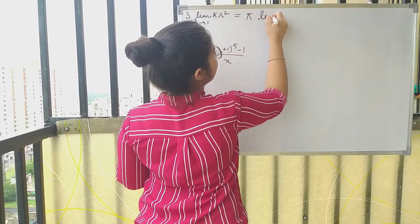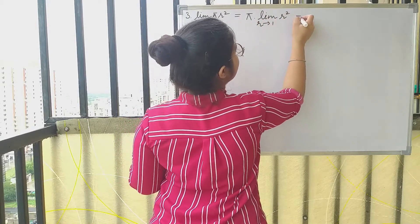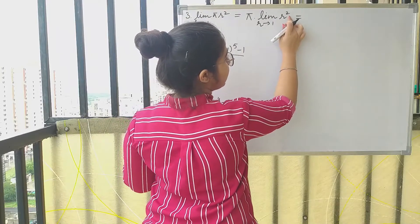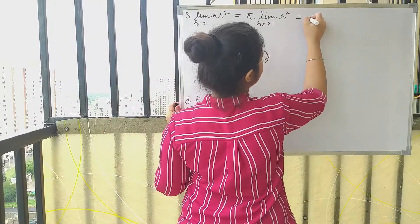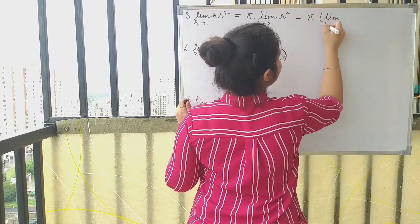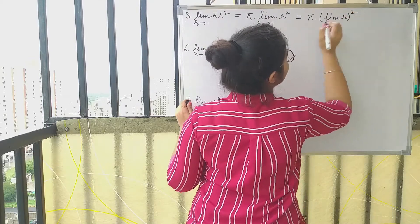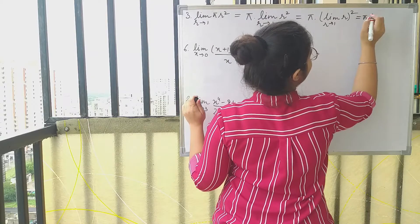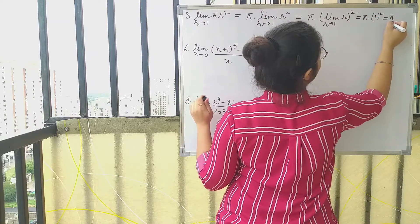Then we have limit r tends to 1 of r squared. We can take out the square and put it inside, writing it as limit r tends to 1 of r, quantity squared. So this limit becomes π into 1², which is the same as π. So this limit is π.